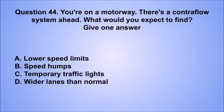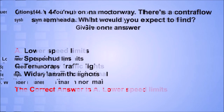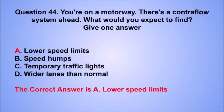Question 44. You're on a motorway and there's a contraflow system ahead. What would you expect to find? The correct answer is A: Lower speed limits.